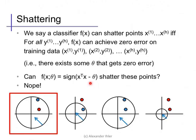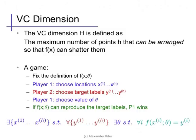The VC dimension, then, is defined as the maximum number of points that can be arranged so that the classifier f of x can shatter them. I think it's helpful to think of this process as a kind of game. So, we fix the definition of our learner f of x beforehand. And then we alternate between two players.